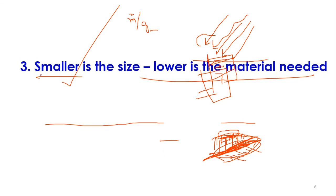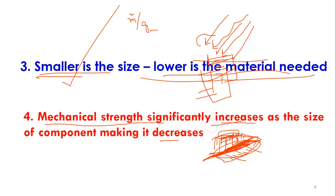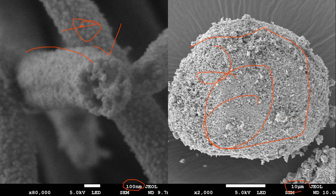The third bulk disadvantage is that larger size requires more material. The fourth is that mechanical strength decreases when more material is used. With less material at smaller scales, there is greater mechanical stress resistance, meaning nanomaterials are mechanically superior. That was all about the differences between nano and bulk materials — thanks for watching.